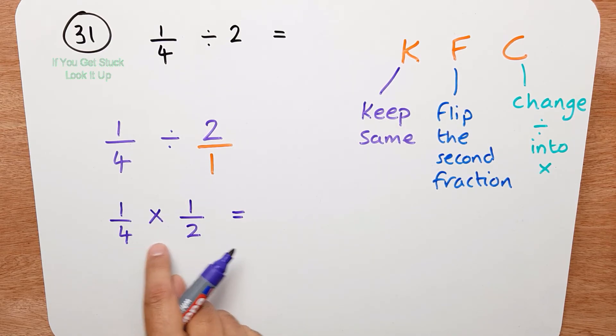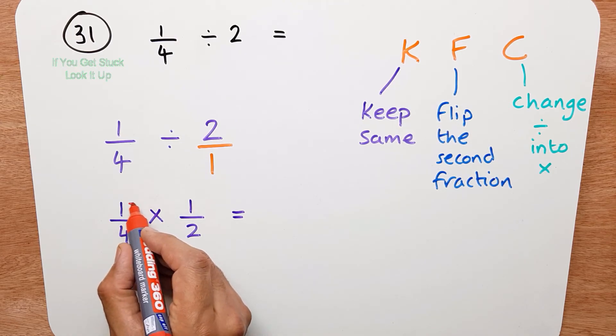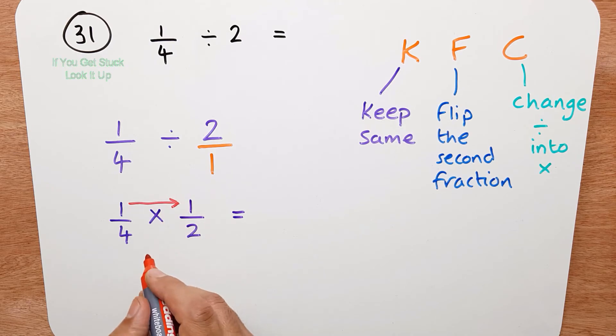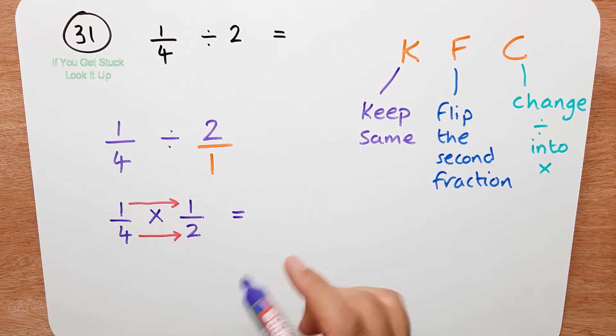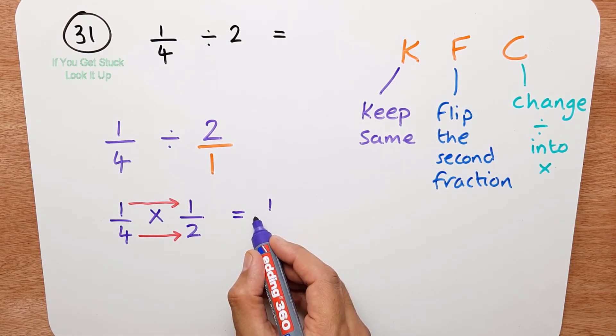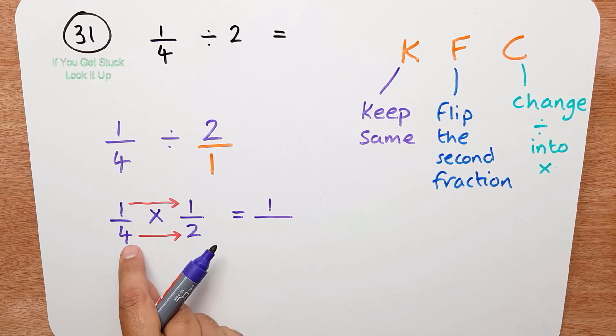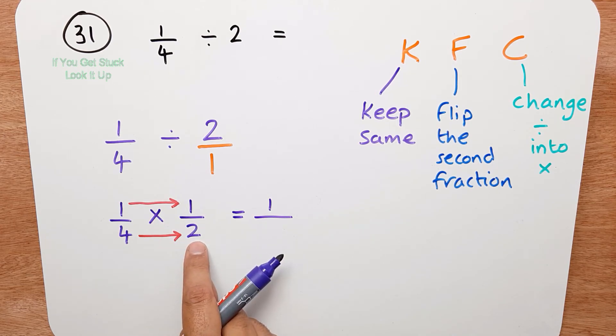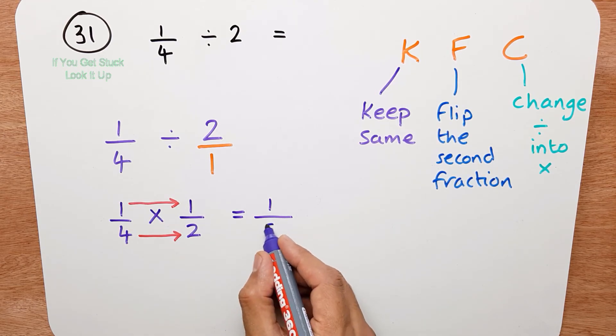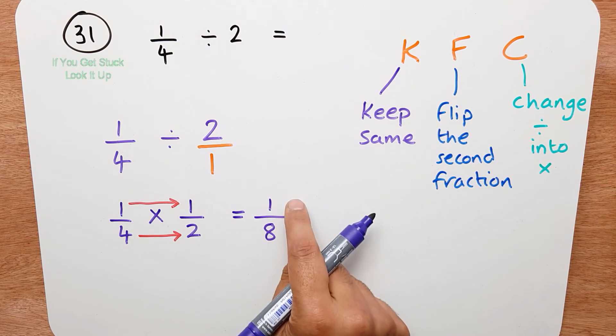Now multiplying two fractions is very easy. You've just got to remember you multiply the numerators and you multiply the denominators. So 1 times 1 is 1. Your fraction line. 4 times 2 is 8. So our answer is 1 eighth.